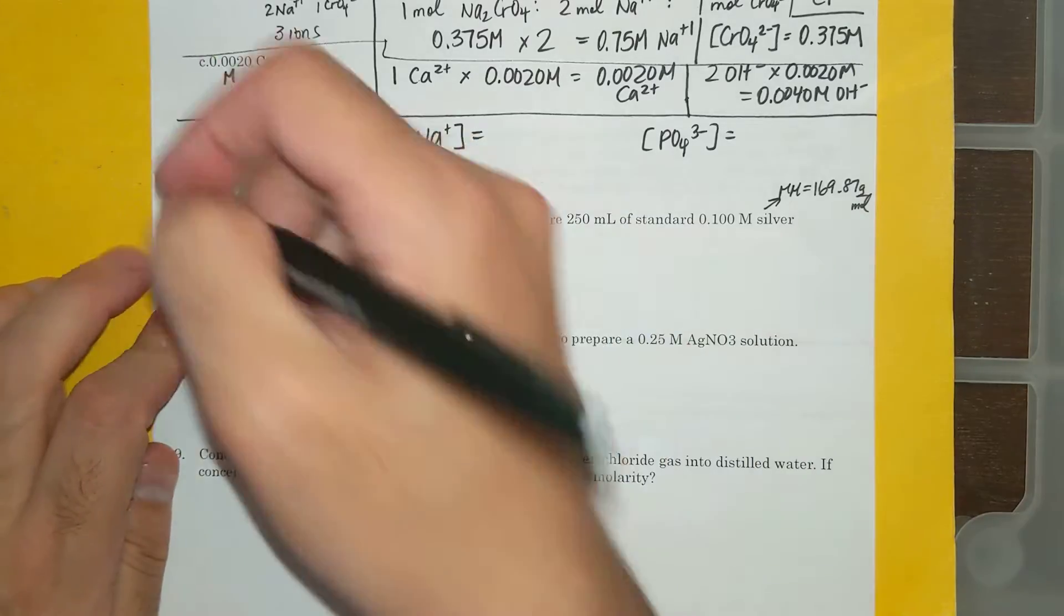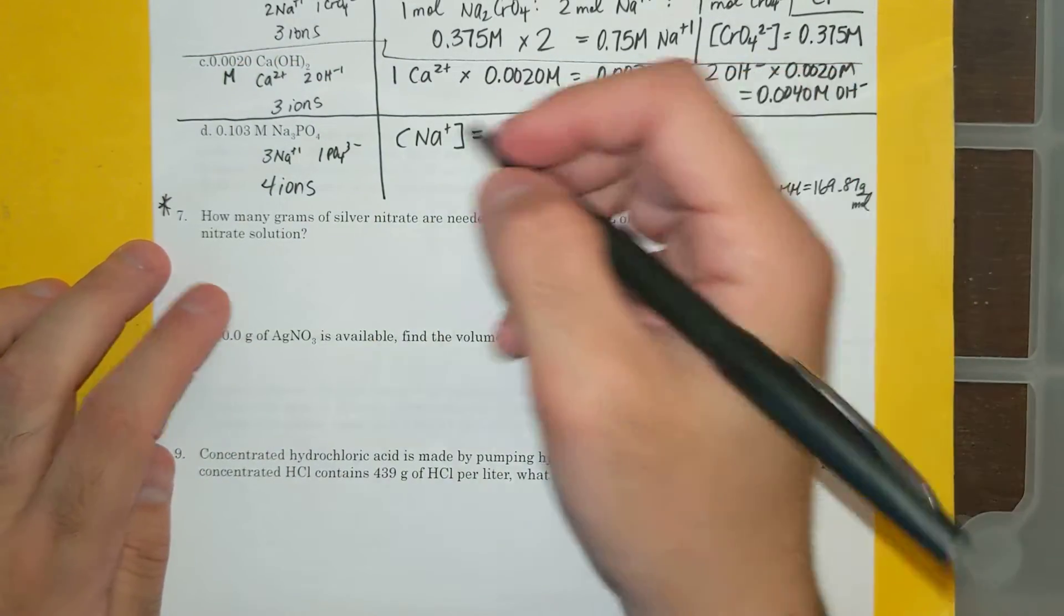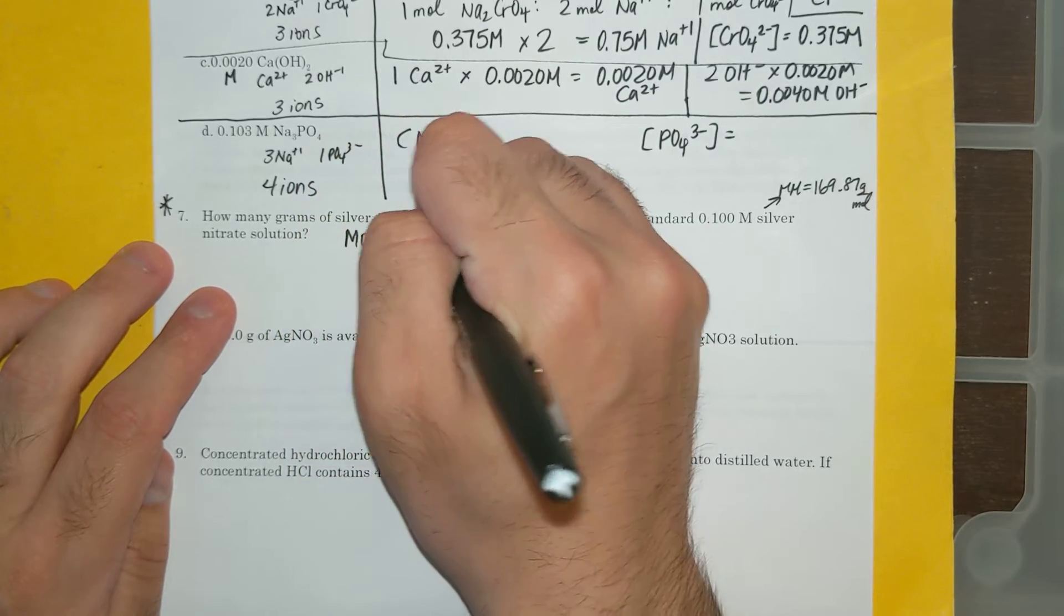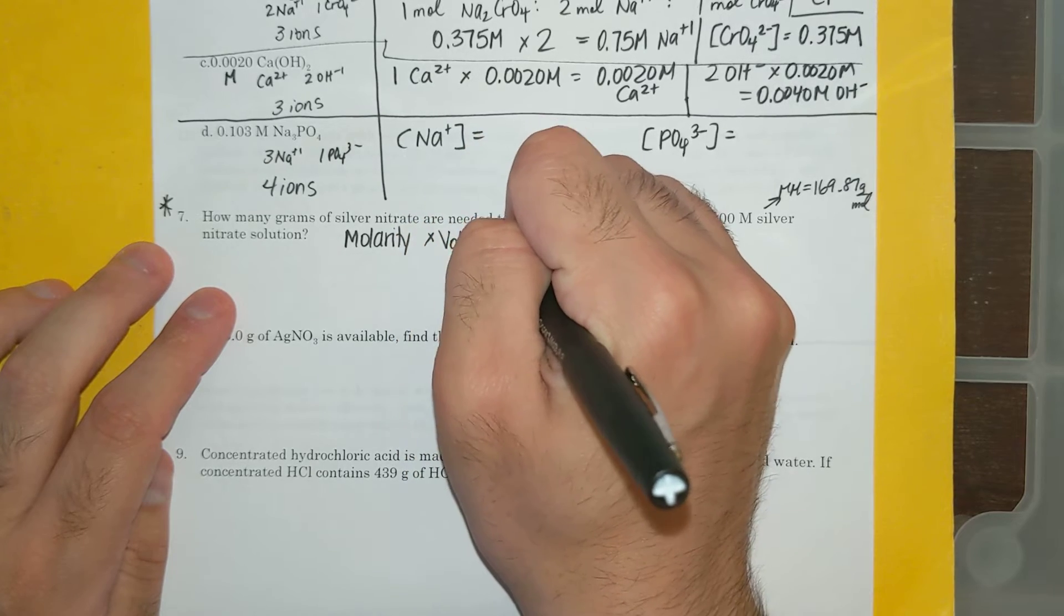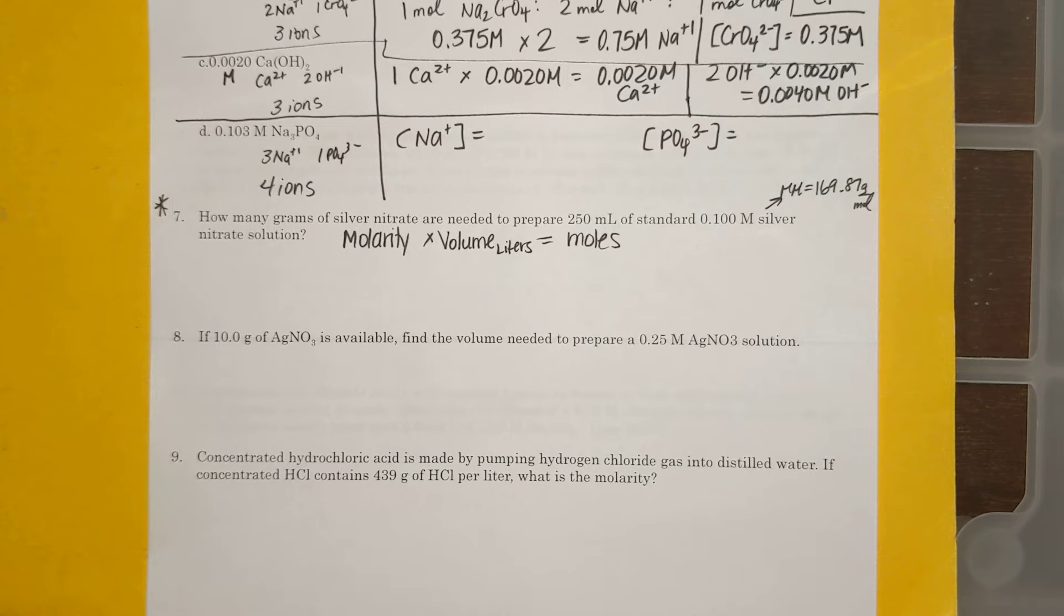Now I already have the molar mass here, but this is so important. This involves my favorite equation. Molarity times the volume in liters gives me moles. And you know for the last two units, including this one, moles is everything I need for stoichiometry. So number seven is going to set us up for starting to do stoichiometry in solutions.